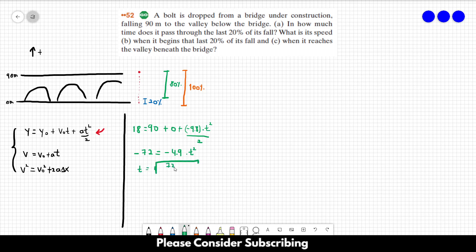So t would be the square root of 72 over 4.9. And this is equal to 3.83 seconds. So this is the time that it takes for the boat to travel the first 80% of the 90 meters.